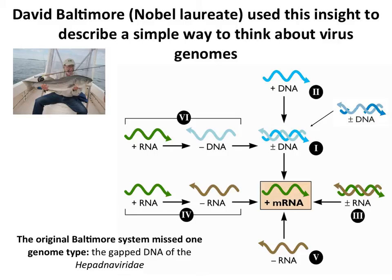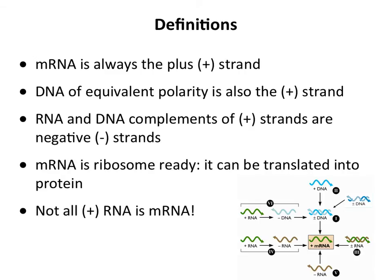David Baltimore, of course, likes to fish — that's him up there. Before we go on with the Baltimore Scheme, let's do some definitions so we're all talking the same language. These have to do with polarity. As you know, mRNA is, by convention, the plus strand. Someone asked me last year if it had to do with charge or electricity — no, it has nothing to do with any of that. It's just convention that what is translated — mRNA — is called the plus strand.